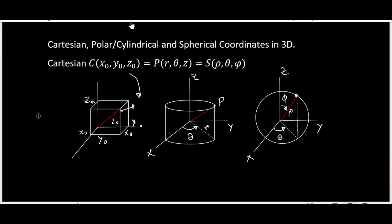For cylindrical coordinates, theta ranges from 0 to 2π. In spherical coordinates, theta again ranges from 0 to 2π, but phi is the angle ranging from 0 to π, allowing us to go all the way to the z-axis.